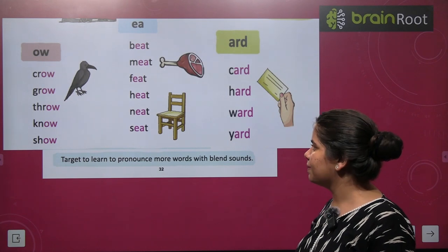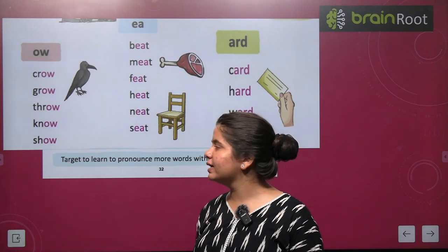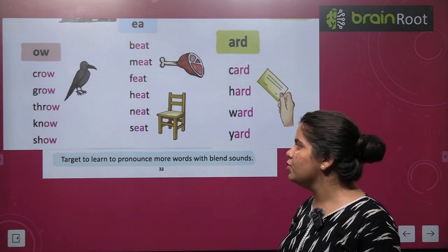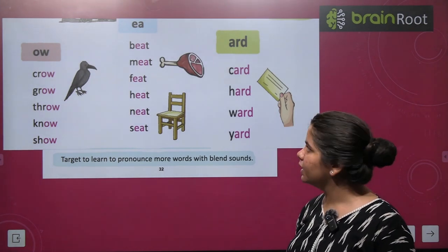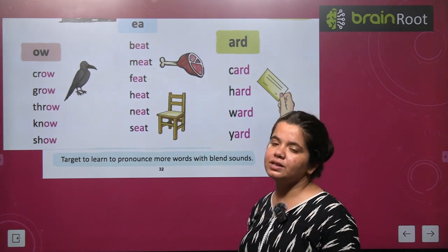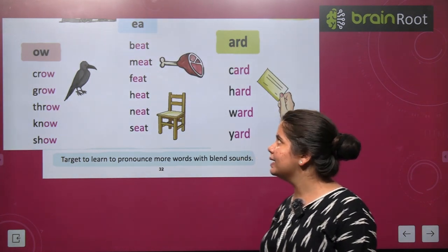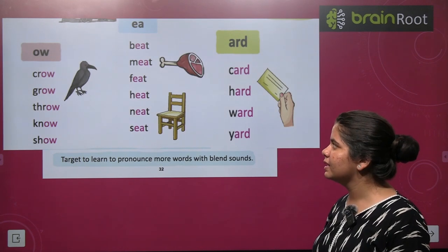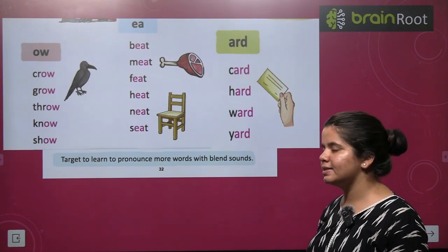Next we have OW words: crow, grow, throw, no, show. Next we have EA words. EA words: beat, meet, feet, heat, neat, seat.